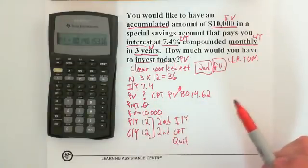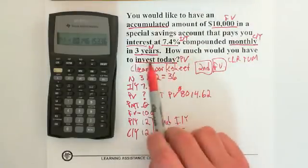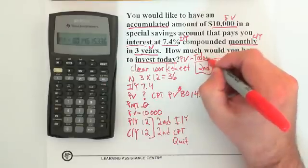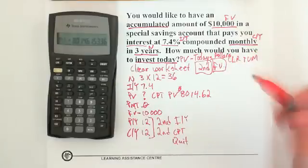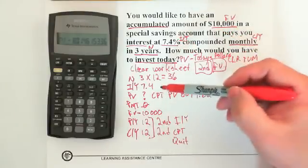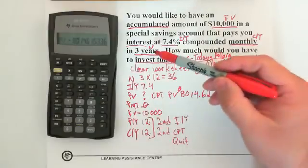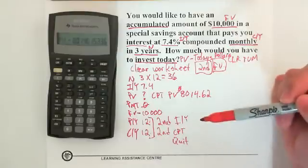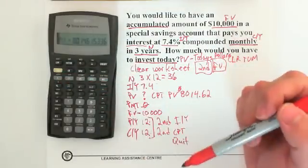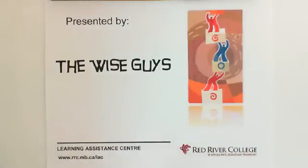Quick review: the question asked how much to invest today — that's present value, today's dollars. The $10,000 to accumulate is our future value. The interest rate was 7.4% compounded monthly, so CY is 12. No payments means PY equals CY, both 12. For three years, N = 3 × 12 = 36. We entered the numbers, entered PY and CY separately, and computed the present value. This has been another Wise Guys Tutoring video — visit us through the RRC website.